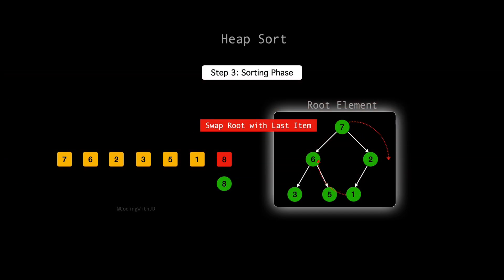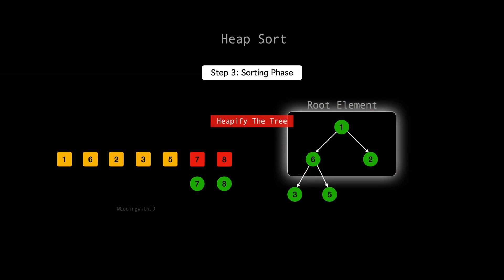We'll swap the root of our heap, 7, with the last element, which is 1. This exchange moves 7 to its correct position in the sorted sequence, and brings 1 to the root where it will need re-evaluation. Next, our task is to restore the max heap property starting from the root. With 1 now at the root, it's lighter than both of its children, 6 and 2. We need to swap 1 with the largest of its children to maintain the max heap structure. 6 is larger than 2, so we'll swap 1 and 6.